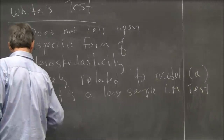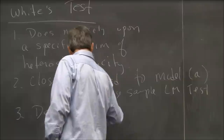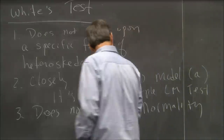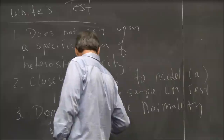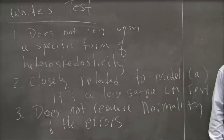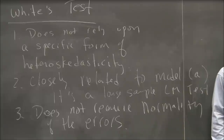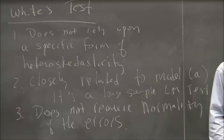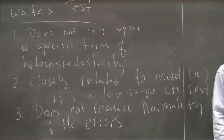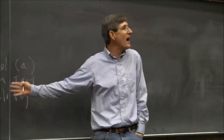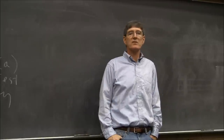Importantly, White's test does not require normality of the errors. The other tests we did required imposing a particular distribution. For most tests, in order to get an F-distribution or chi-square distribution, you need normality. You don't need normality of the errors here, so it's robust to different distributional assumptions.